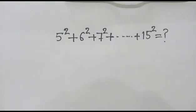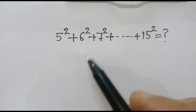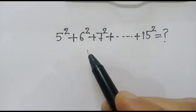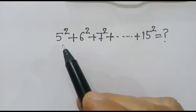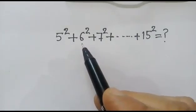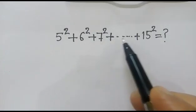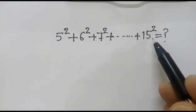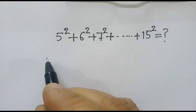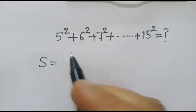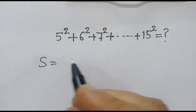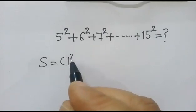Hi friends, we have given a series and we have to find out the sum of this series: 5 squared plus 6 squared plus 7 squared plus up to 15 squared. We can write this series as 1 squared plus 2 squared plus 3 squared plus up to 15 squared.